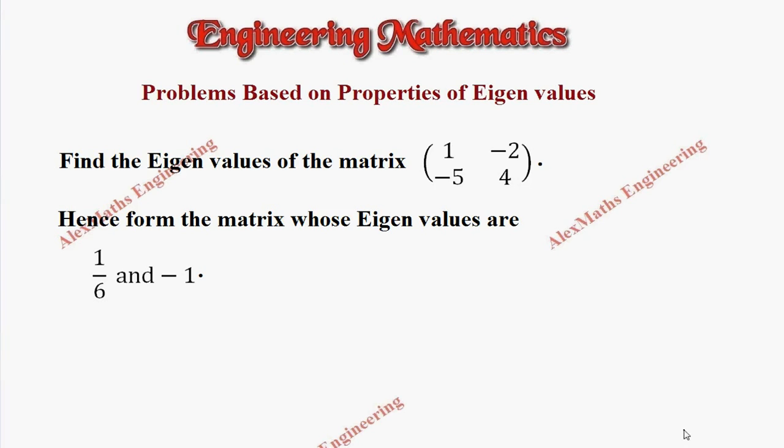Hi students, this is Alex. In this video, we are going to discuss a problem based on the properties of eigenvalues. The first part of the question asks to find the eigenvalues of the given matrix A, a two-row and two-column matrix with elements 1, -2, -5, and 4.